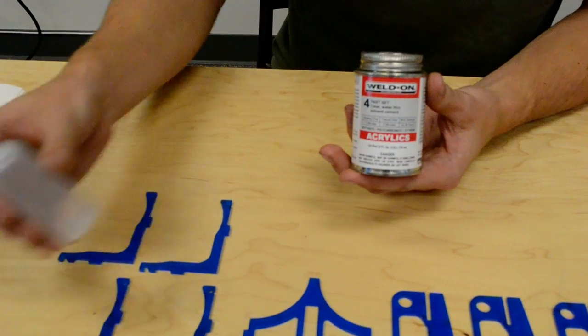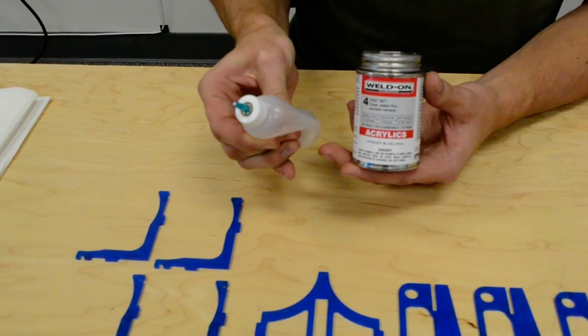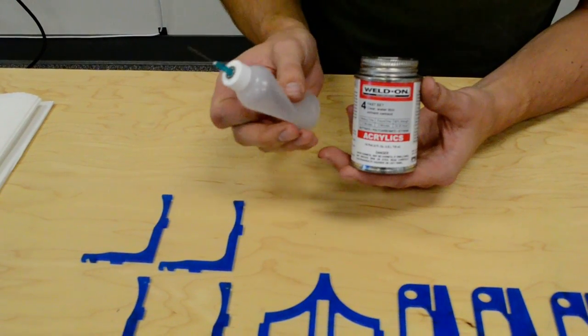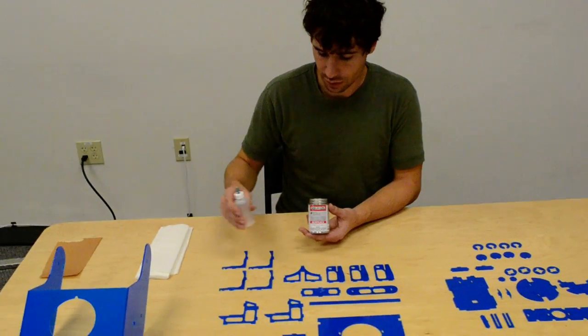It's a really inviscous material. You can use a syringe like this, and you basically inject it into the interface between two pieces of plastic, and it wicks into the interface through the capillary effect.